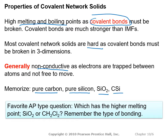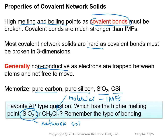A favorite AP question is: which has the higher melting point, SiO₂ or CH₂Cl₂? What's key is remembering what type of bonding each has. Your initial response might be CH₂Cl₂, but that is a molecular compound held together by intermolecular forces. SiO₂ is a network solid held together by covalent bonds. So the correct answer is SiO₂.